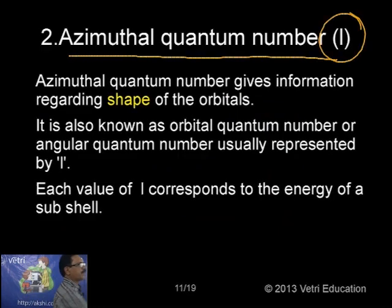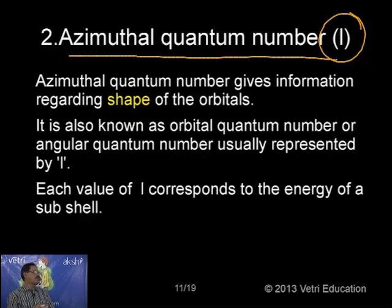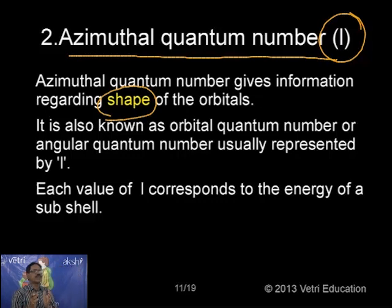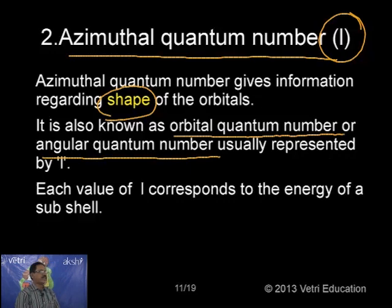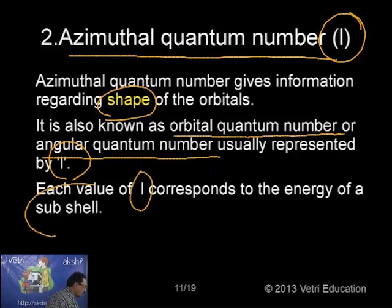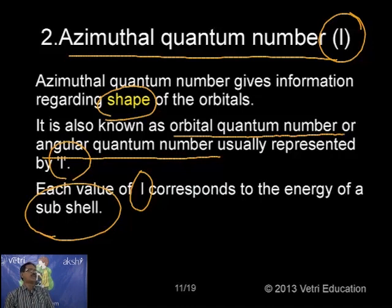The second quantum number is the azimuthal quantum number, usually represented by l. Azimuthal quantum number gives information regarding the shape of the orbital, also known as the orbital quantum number or angular quantum number. Each value of l corresponds to the energy of a subshell. The azimuthal quantum number l indicates the subshell.